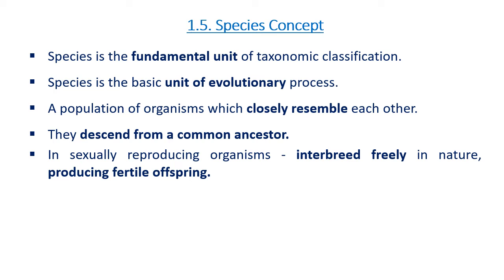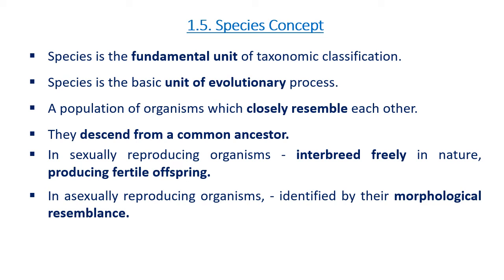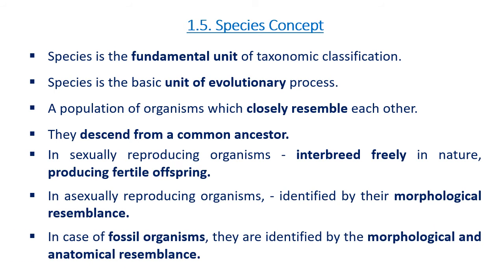In sexually reproducing organisms, they interbreed freely in nature producing fertile offspring. In asexually reproducing organisms, they can be identified by their morphological similarities. In the case of fossil organisms, they are identified by their morphological and anatomical similarities.